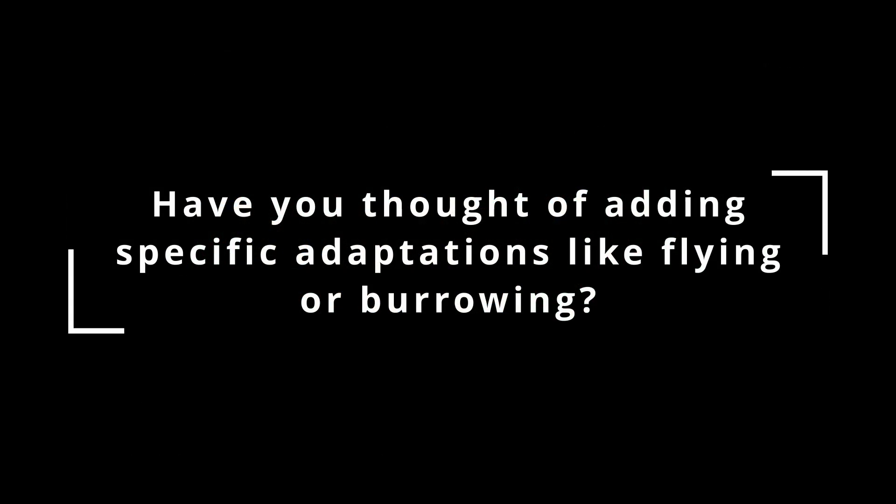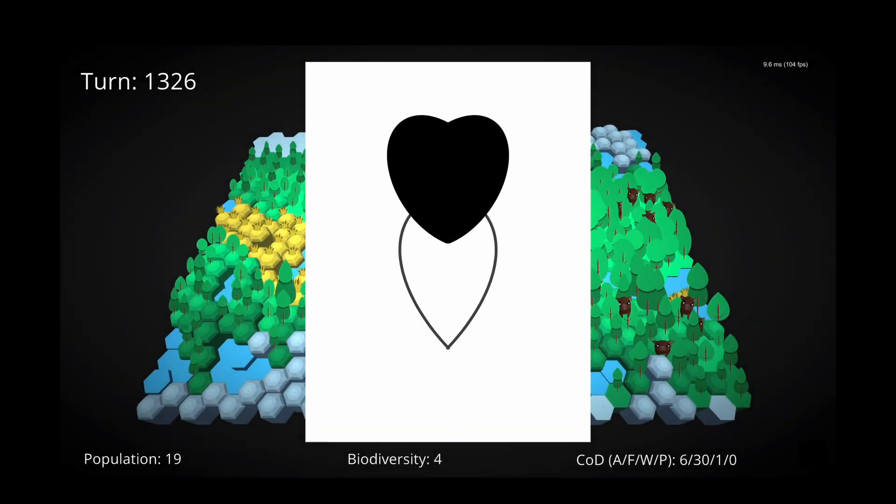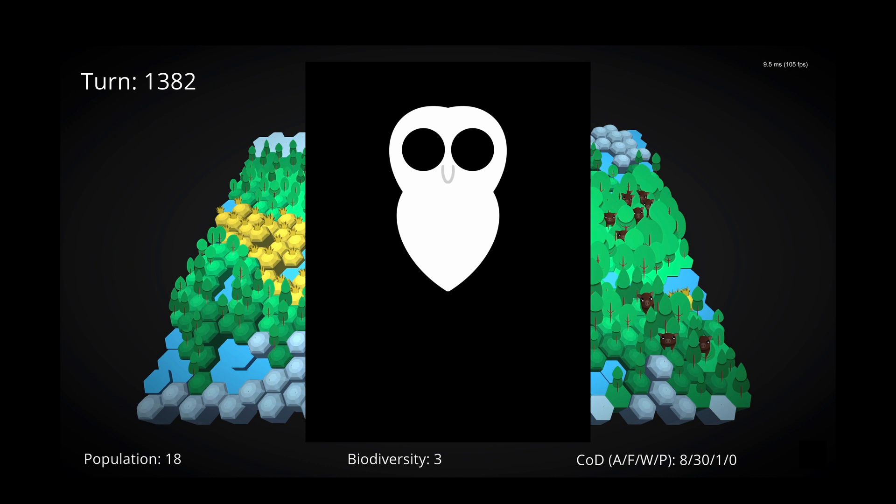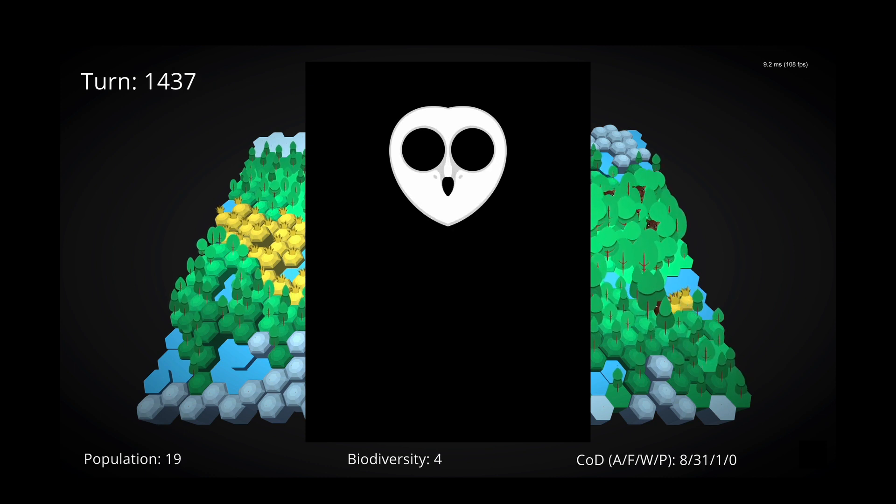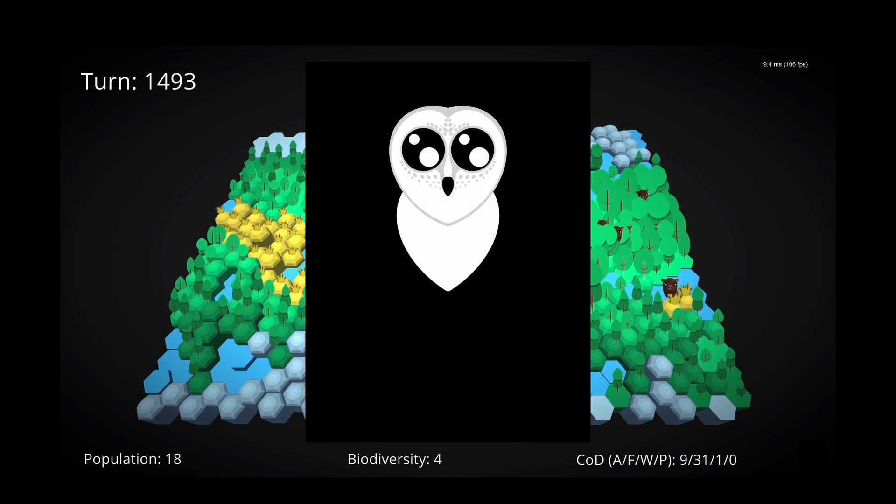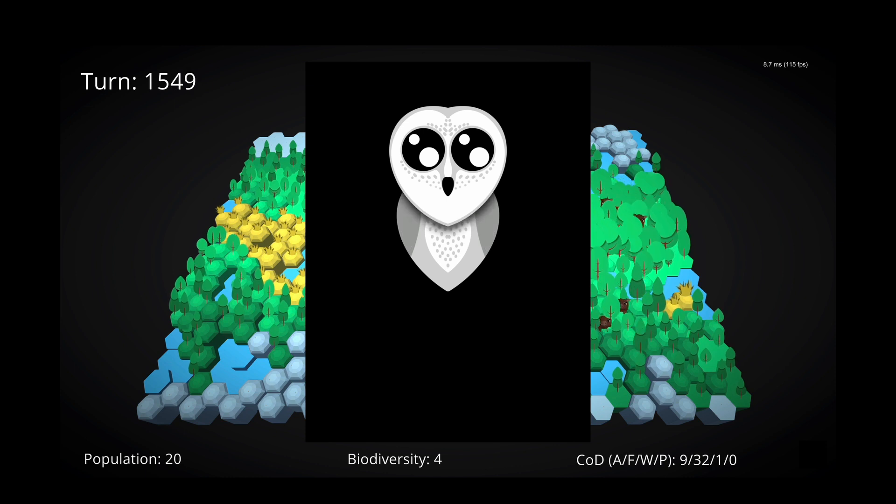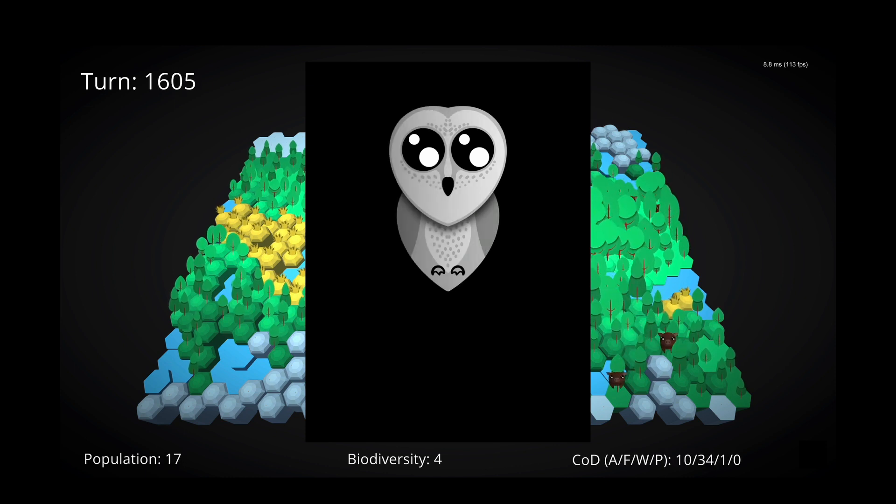Have you thought about adding specific adaptations like flying or burrowing? Yes, both of these are great ideas that offer interesting opportunities for complex behaviors. Flying, for example, can of course be used for travel, but it also offers a means for escape, hunting, and access to otherwise unreachable areas of the map for mating.